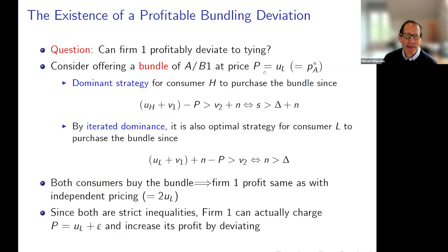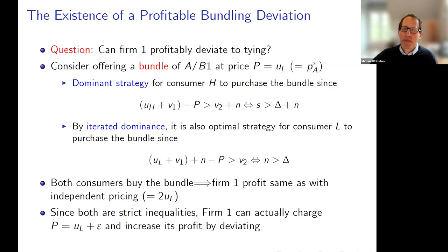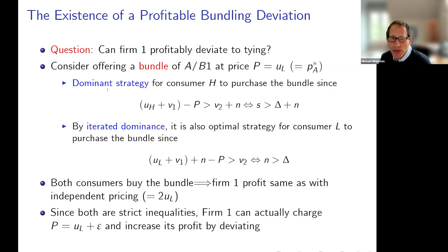So let's consider firm one introducing a bundle of A and B1 at a price equal to the old single-market monopoly price, namely U_L. Imagine we're in the independent pricing equilibrium: firm one is losing in market B, setting a price of zero; in market A it's charging the monopoly price U_L. It suddenly deviates, gets rid of independent pricing, and introduces a bundle priced at U_L. The first point is that under the assumptions I've made, it's going to be a dominant strategy for consumer H to purchase the bundle.